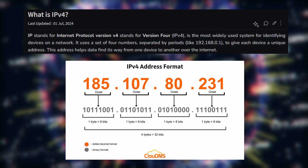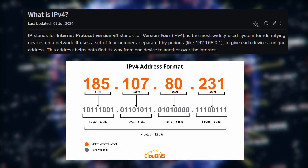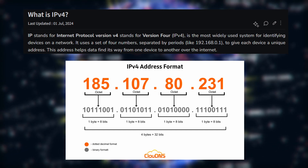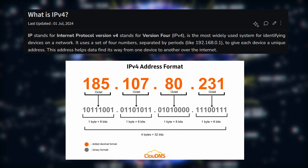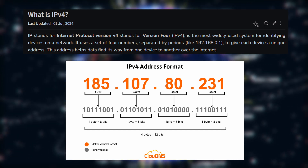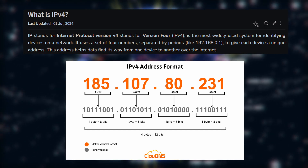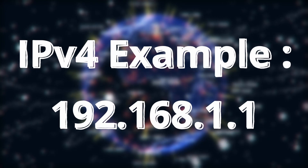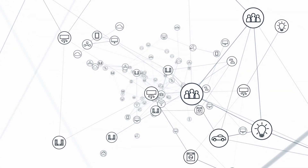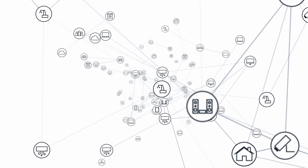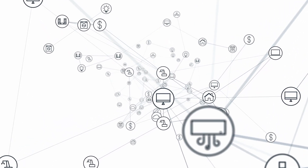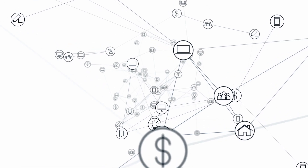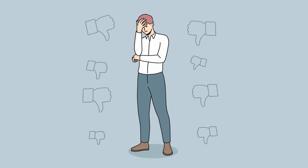IPv4, or Internet Protocol Version 4, is the original system developed to assign addresses. It uses 32-bit addresses, which means each IP address has four segments, each ranging from 0 to 255, like 192.168.1.1. With these four segments, IPv4 can provide about 4.3 billion unique addresses. But with billions of devices now online, we've run out of IPv4 addresses.